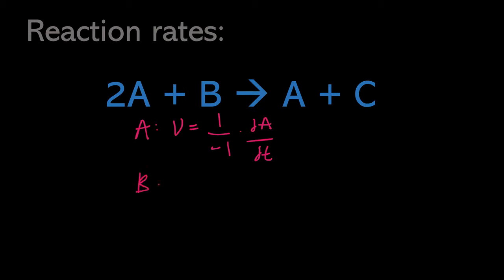If we define the reaction rate in terms of species B, we have nu equal to 1 over the stoichiometric coefficient of species B, which is 0 minus 1, so negative 1, times dB/dT. And if we define it in terms of species C, we have the reaction rate equal to 1 over the stoichiometric coefficient of species C, which is 1 minus 0, or 1, times dC/dT.